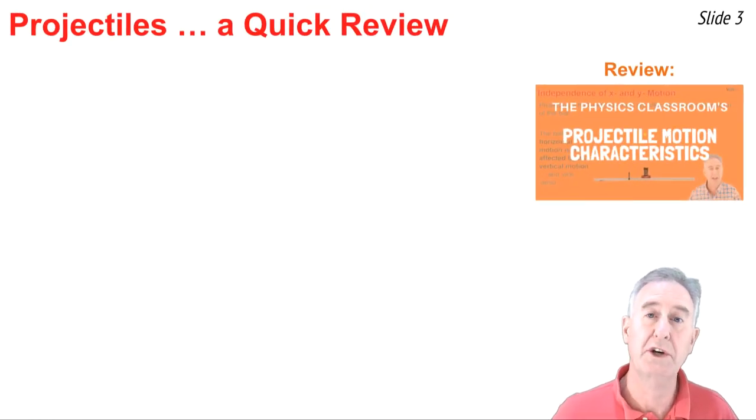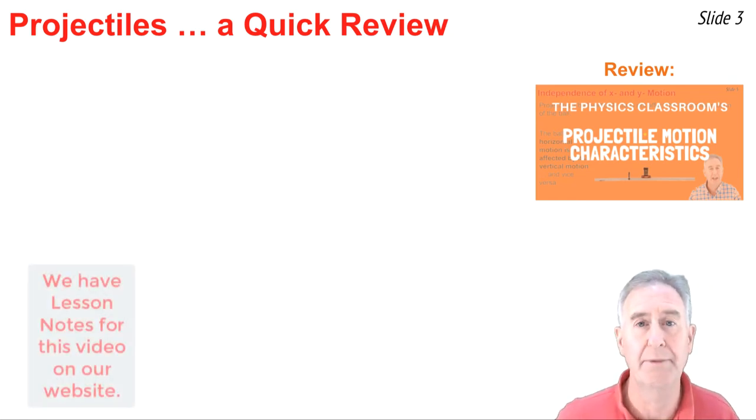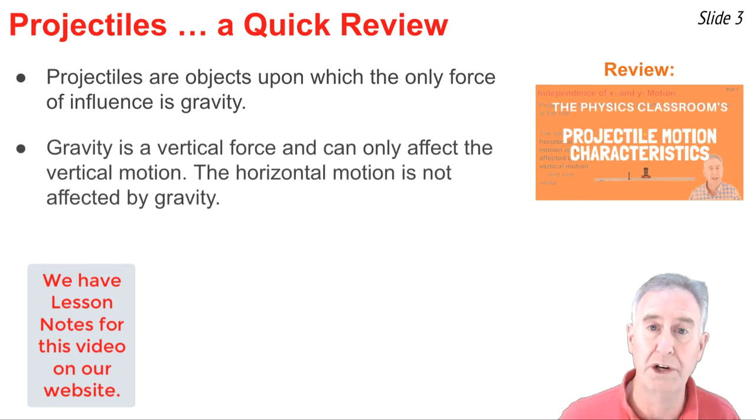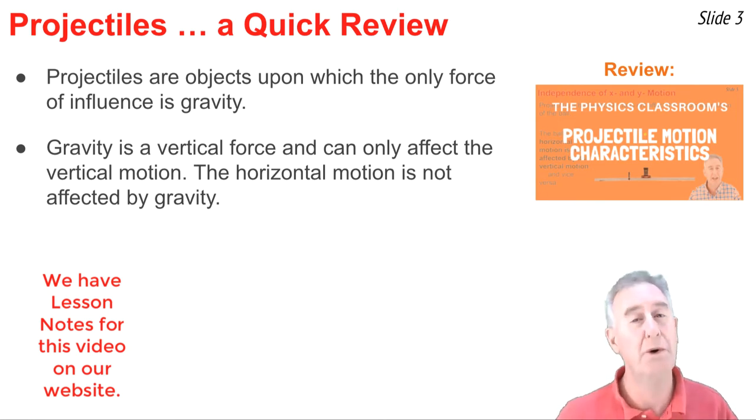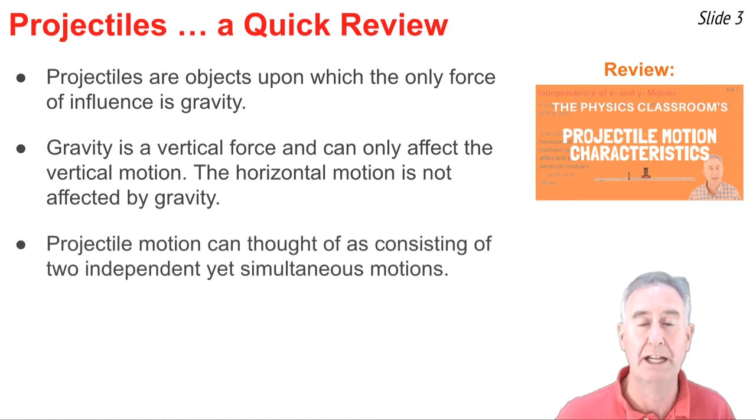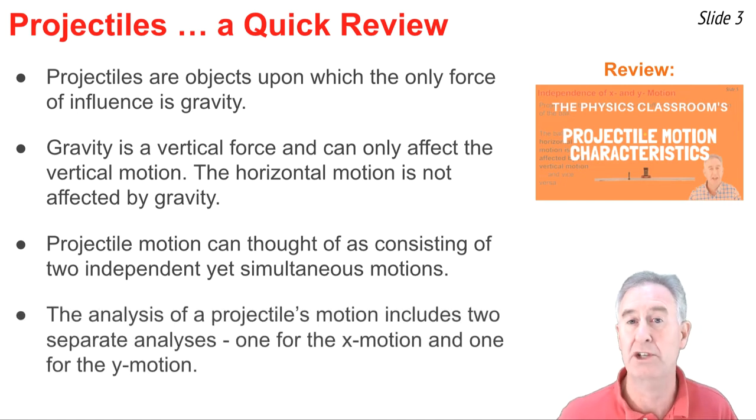One of the previous videos in this tutorial series is the motion characteristics of a projectile. I'm going to review it kind of quickly, but you may want to go back and watch it yourself. First, projectiles are objects upon which the only force of influence is gravity. And gravity is a vertical force. As a vertical force, it only affects the vertical motion of a projectile. The horizontal motion is unaffected by the force of gravity. We often think of projectiles as exhibiting two simultaneous but independent motions. And any analysis of a projectile's motion will involve two analyses: one for that vertical motion affected by gravity and the other for the horizontal motion unaffected by gravity.